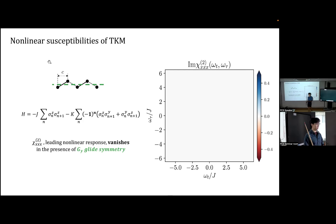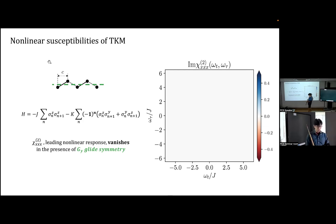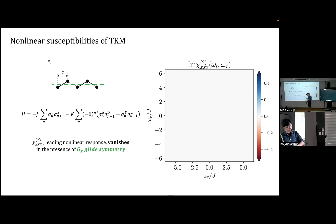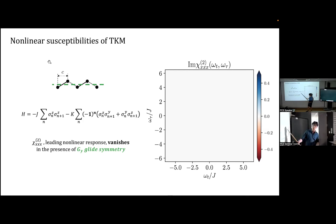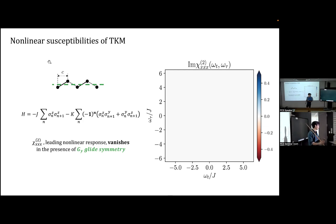However, in the nonlinear response, chi2 XXX actually vanishes for the twisted Kitaev-type model, unlike for the transverse field Ising model. The reason chi2 vanishes is the glide-Y symmetry of the lattice, which prohibits a finite chi2 signal.